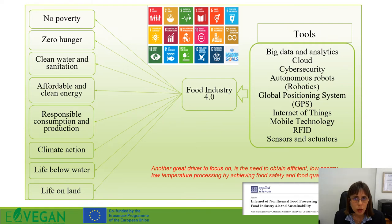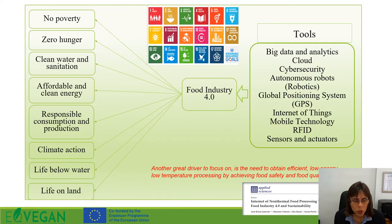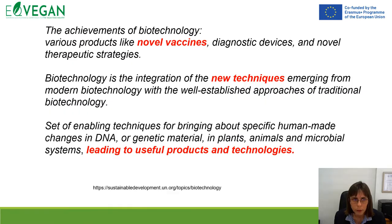Industry 4.0 involves using tools like cybersecurity for food system security, different kinds of sensors, and monitoring and controlling production throughout the entire food production chain. Through this, we can tackle sustainable development goals such as no poverty, zero hunger, clean water and sanitation, affordable and clean energy, responsible consumption and production, climate action, life below water, and life on land.